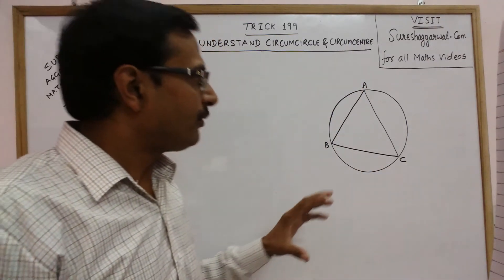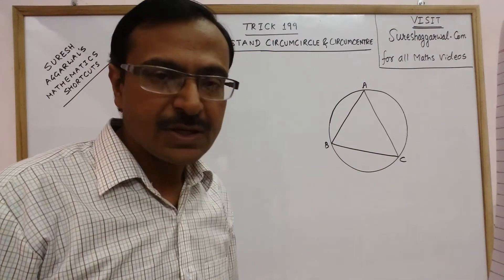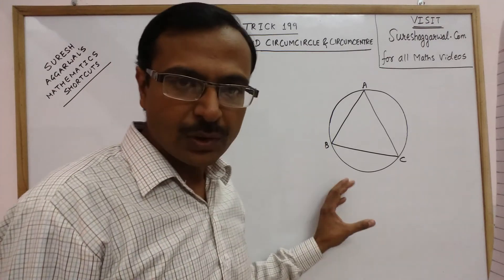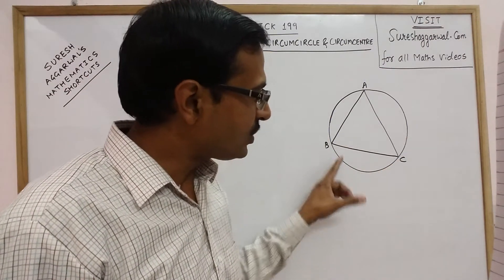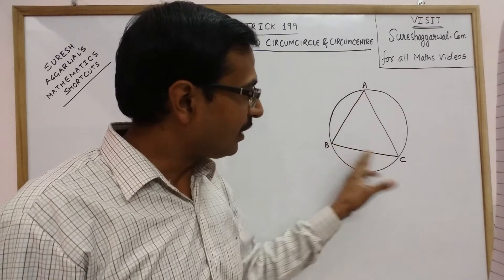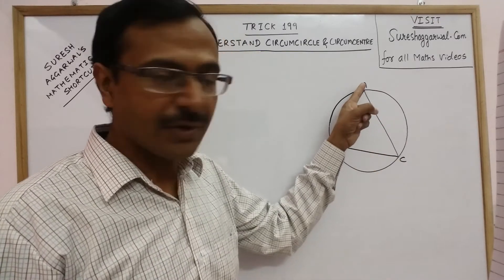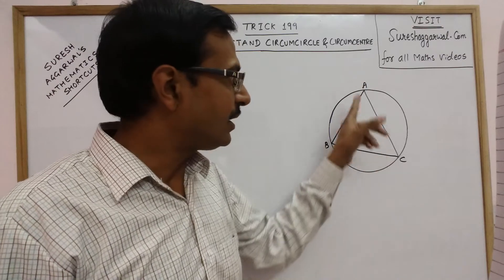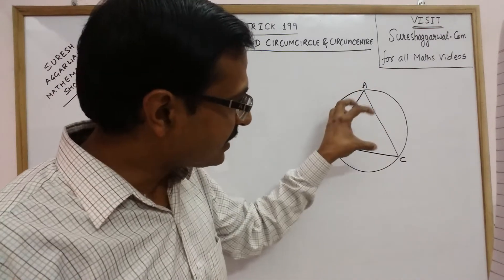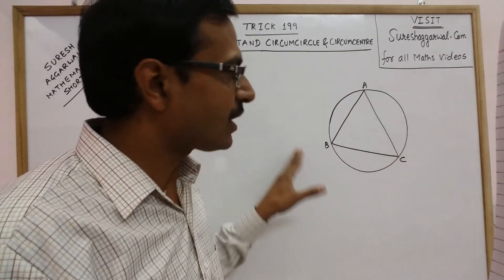Often questions are asked based on this important concept. As you see here, I have drawn a circle in which I have inscribed a triangle whose vertices A, B and C lie on the circumference of the circle. So, triangle is inside and the circle is outside.